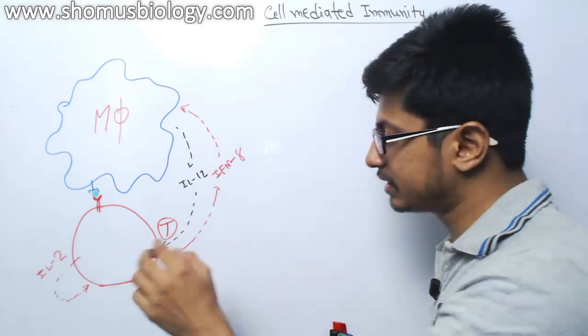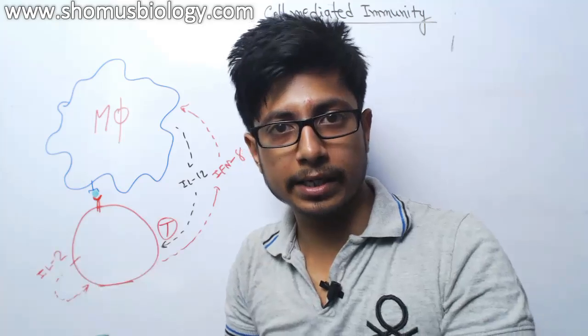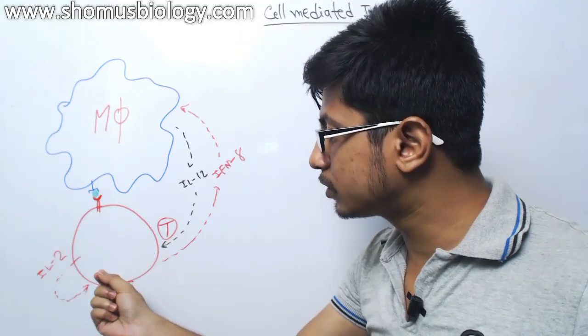On the other hand, T-cell releases interleukin-2 that helps in proliferation of more T-cells in that same place. It not only secretes interleukin-2 as an autocrine, it also secretes interleukin-2 as a paracrine signaling.